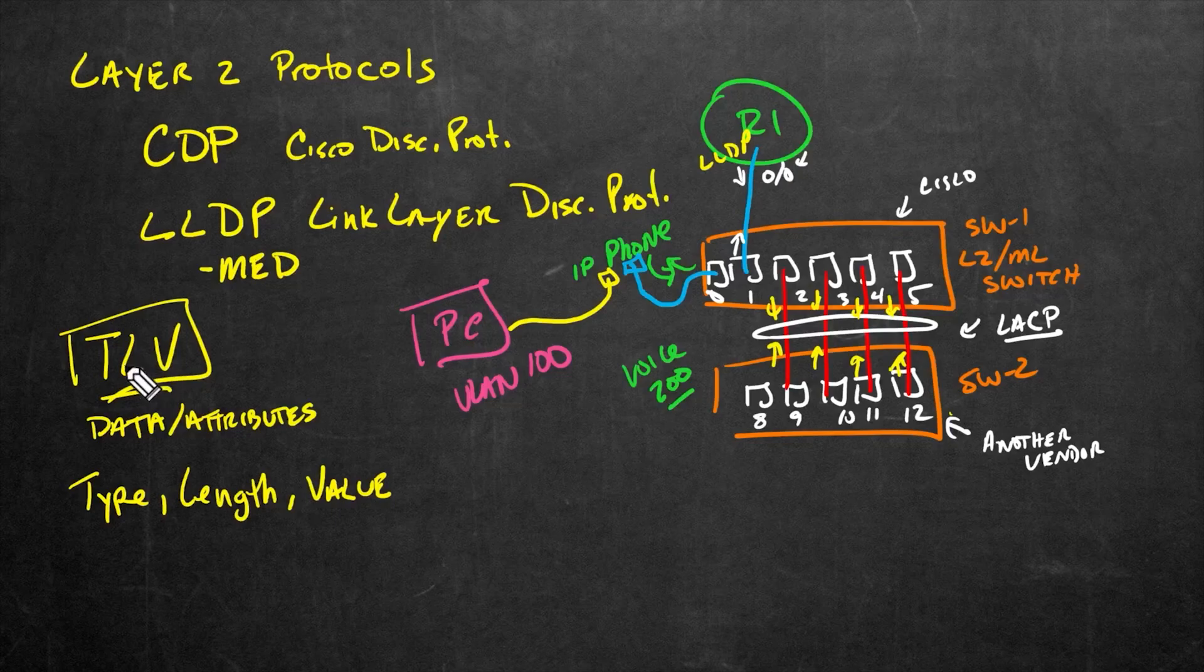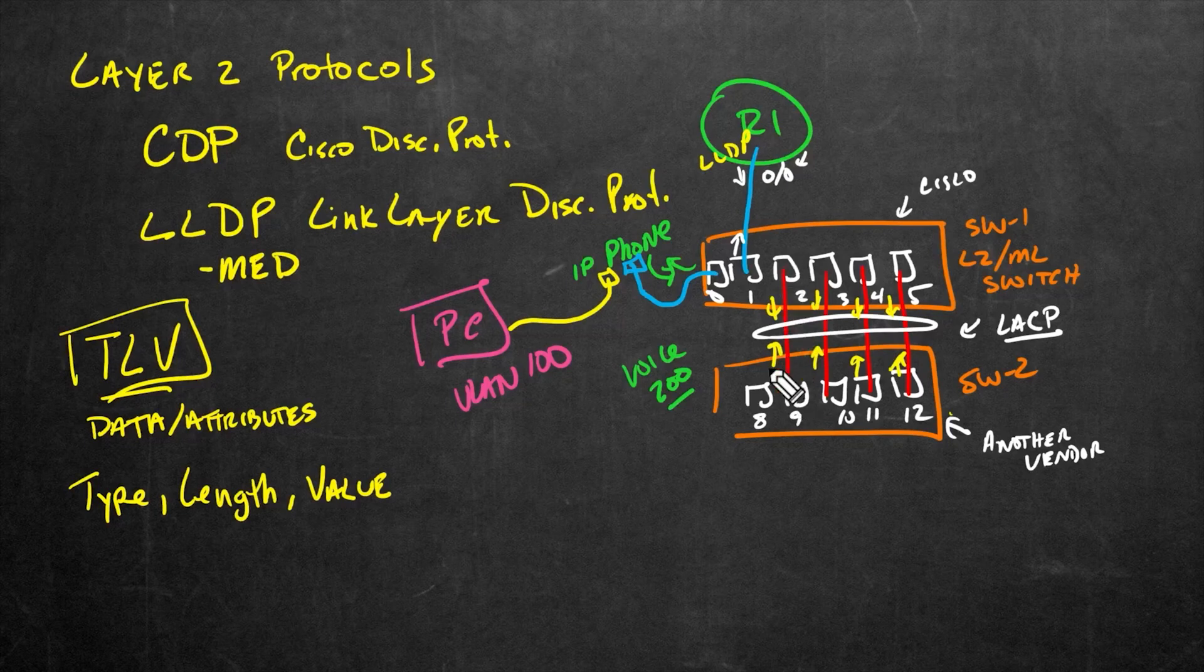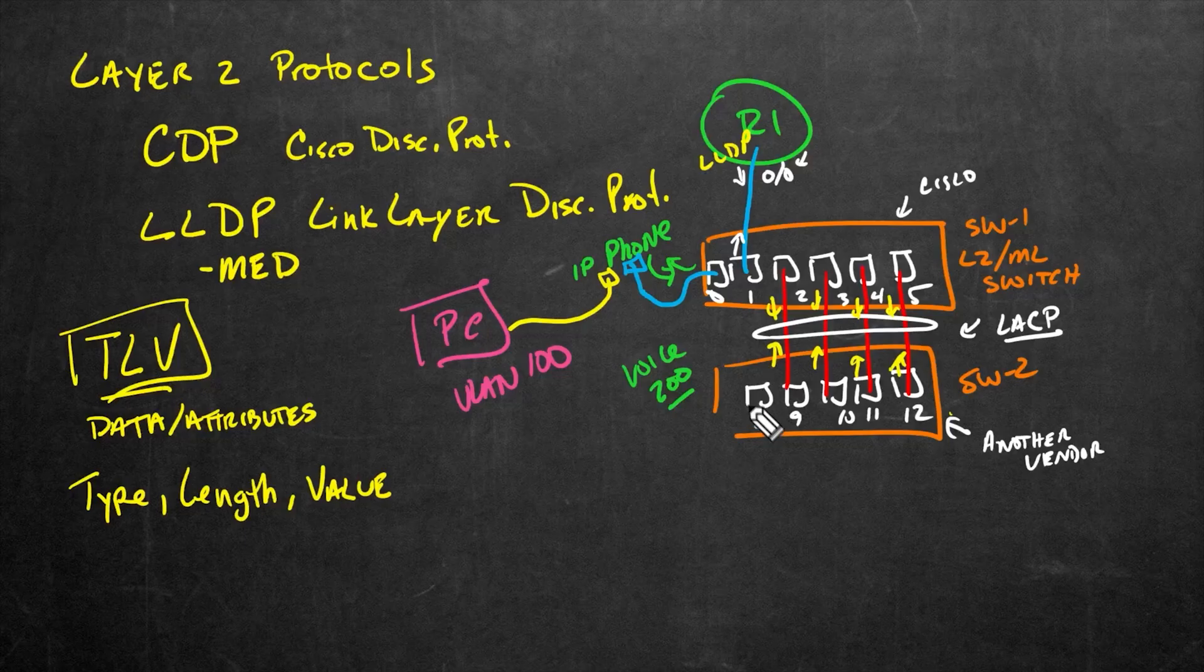Here's a quick example. As part of our TLVs, do we want to include the management IP address as we advertise our little LLDP messages back and forth? Well, if we do want to share what the management IP address is on, for example, switch two, we'd want to include that TLV as part of our LLDP messages.